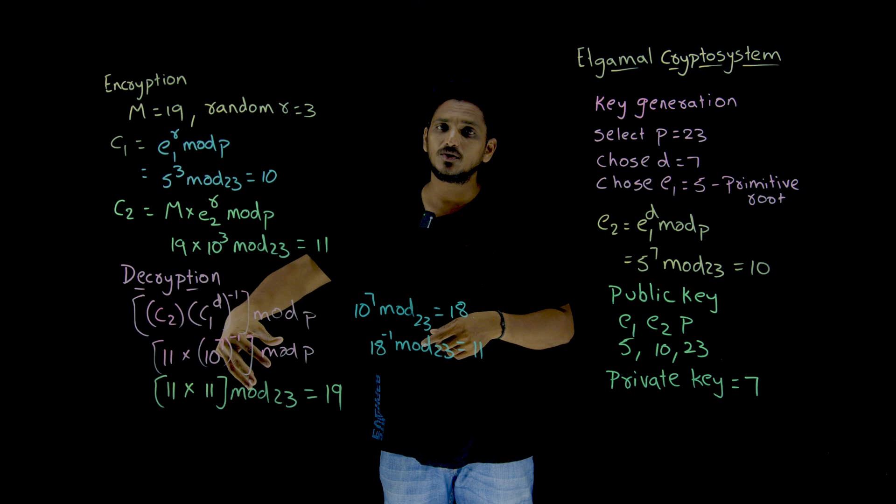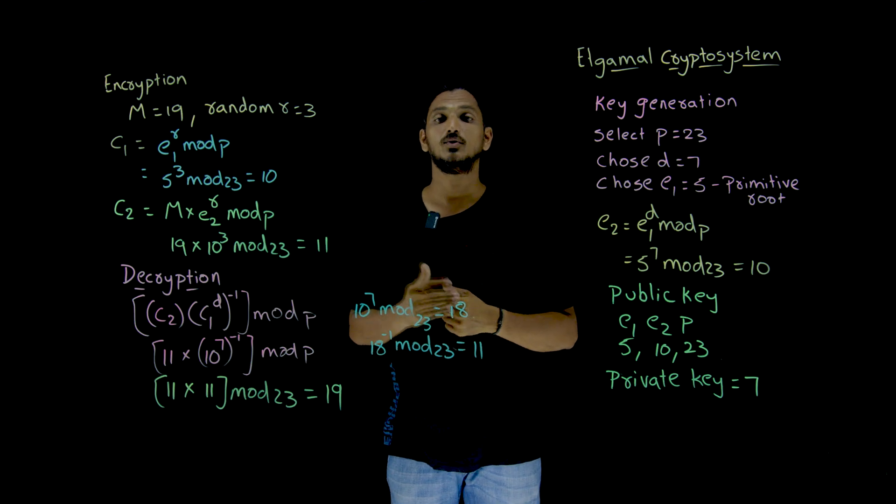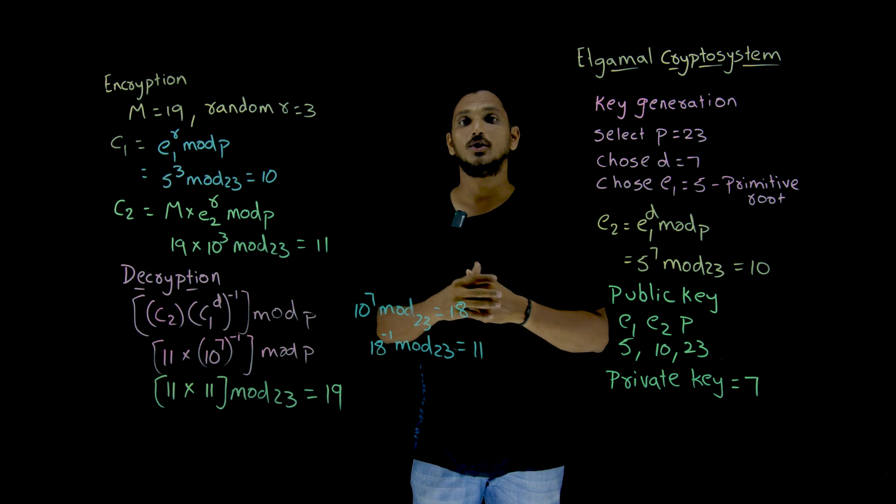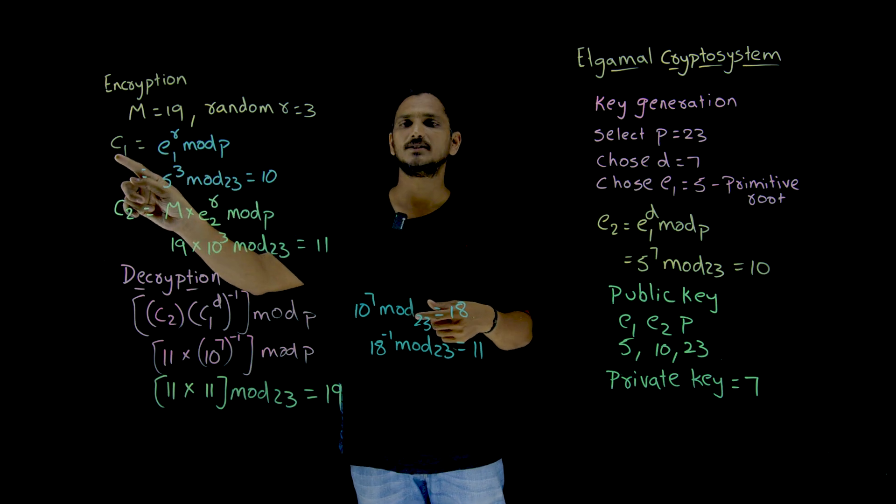Indirectly, he is sending it to the decryption, to the receiver. In order to send that indirectly, he has generated C1.